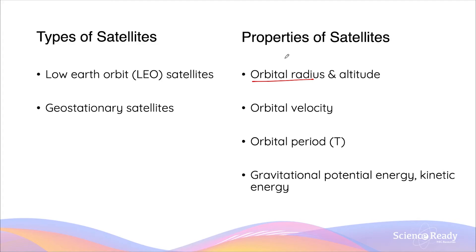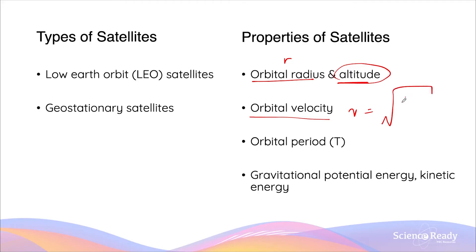These properties include the orbital radius r and also the altitude, which is included in the radius. The altitude is usually defined as the distance of the orbit above Earth's surface. The satellites in these orbits will have various different values for orbital velocities. The orbital velocity is given by the square root of GM over r, where M is the mass of the Earth. They also have different orbital periods — the time taken for the satellite to complete one revolution. We'll also compare differences in gravitational potential energy and kinetic energy of these satellites.